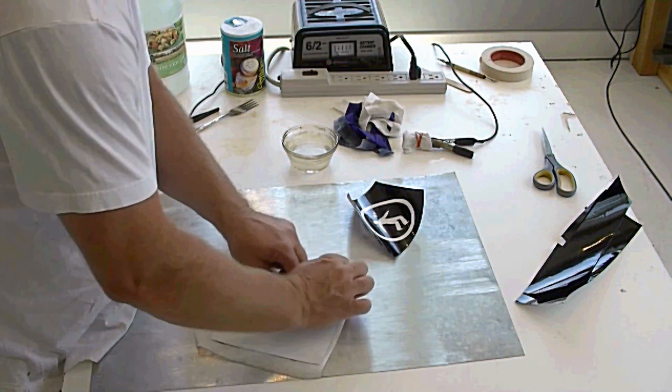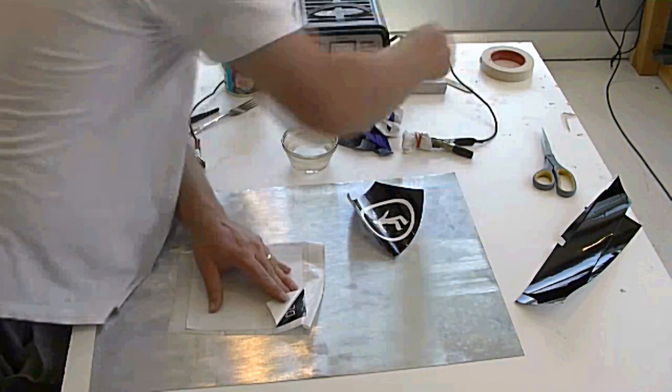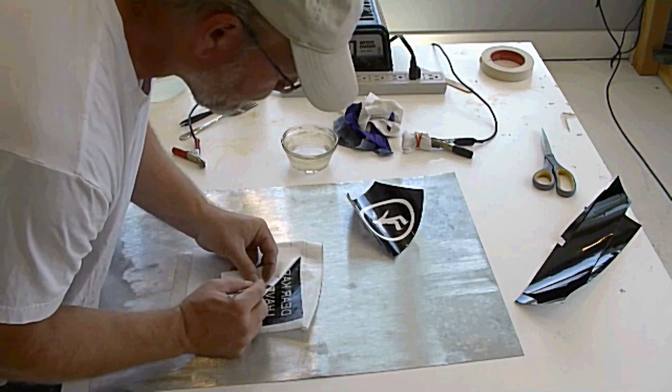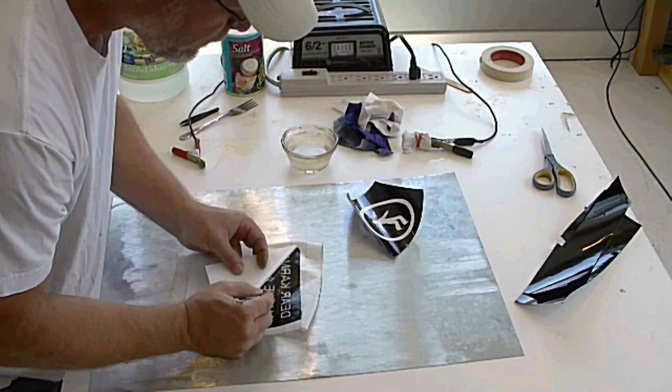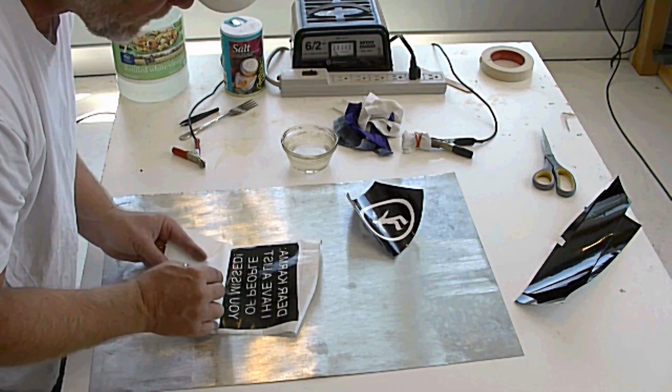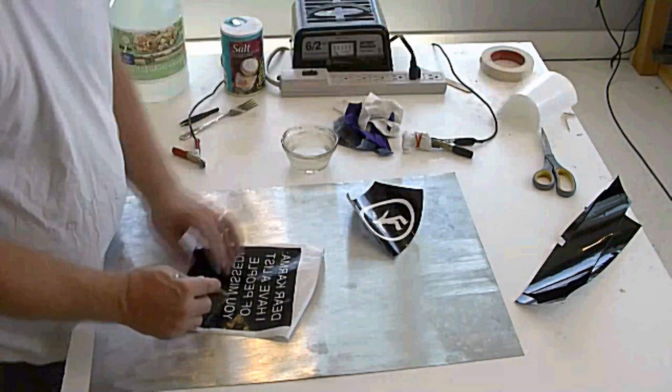You peel off the backing of the vinyl here. You want to be careful because there's bits and pieces that have been cut out and they may come off on the transfer paper. So that's what I'm doing with that little tool - I'm just holding down parts of the vinyl that might pull up with this transfer paper.